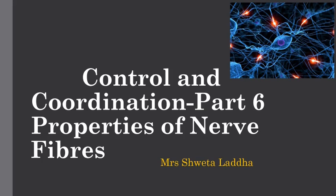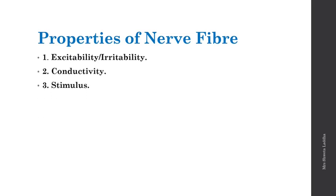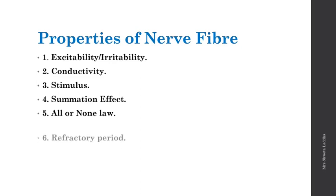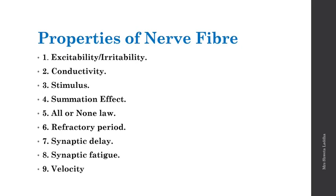Let us start with part 6 of chapter control and coordination. Today we are going to discuss the properties of nerve fibers. There are 9 important properties: excitability (also called irritability), conductivity, stimulus, summation effect, all or none law, refractory period, synaptic delay, synaptic fatigue, and velocity. We are going to discuss each one of these 9 properties in detail.